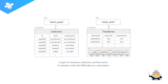GridDB stores IoT data using the key-container model with two types of containers. The collection container works like a normal SQL database table where the row key can be anything — for example, an equipment ID like 'equipment001'. The time series container uses a timestamp as its row key and comes with special time series functionality, including partitioning and other features. This makes it particularly important to GridDB and what makes it an effective IoT database.